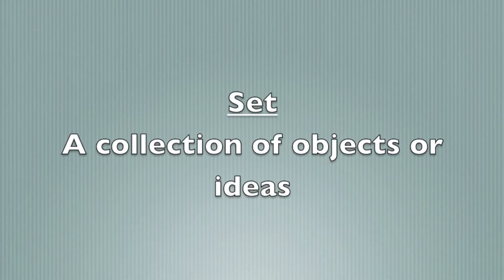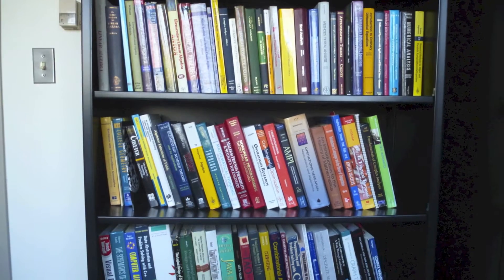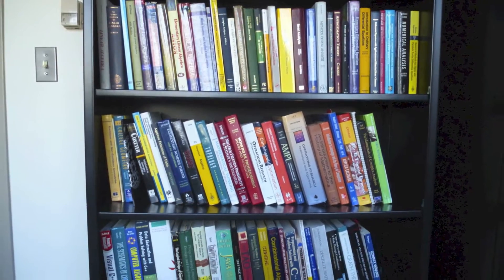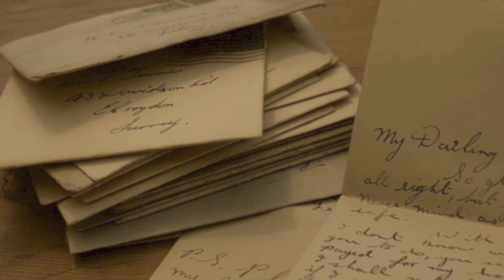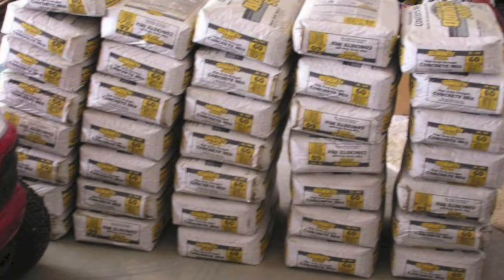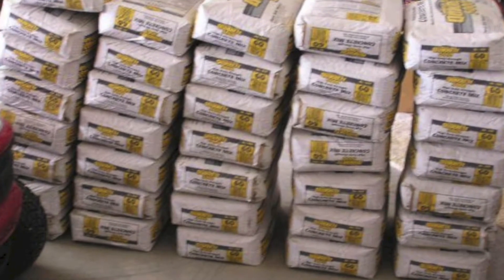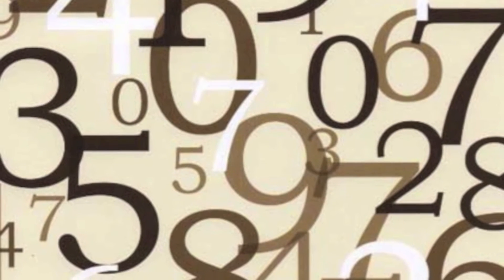A set is any collection of objects or ideas. These can be concrete, like a set of books, or a set of pens, or a set of letters, or even a set of concrete. Or they can be abstract, like a set of ideas, or a set of letters, or a set of numbers.